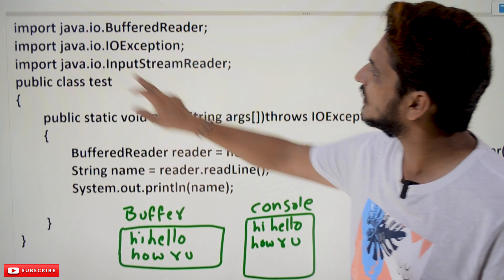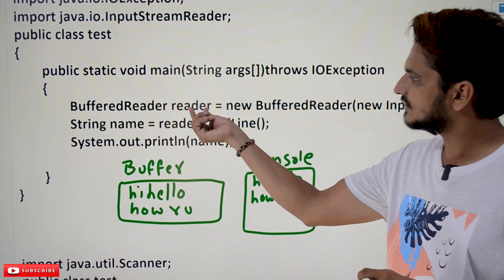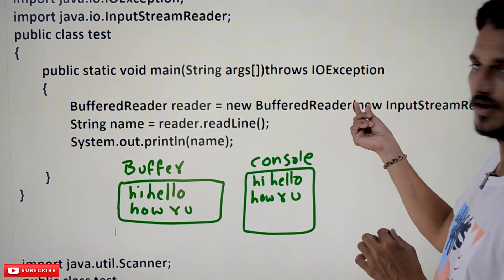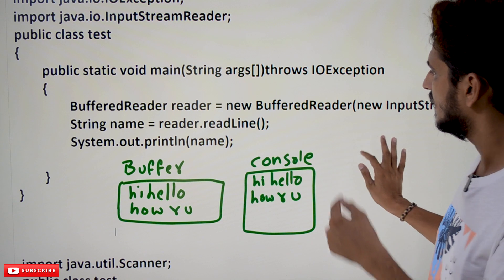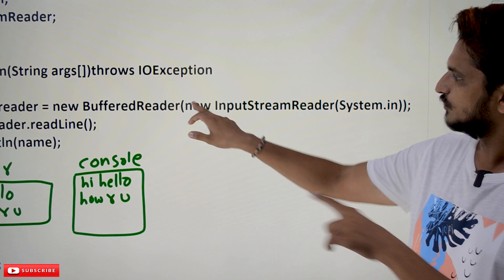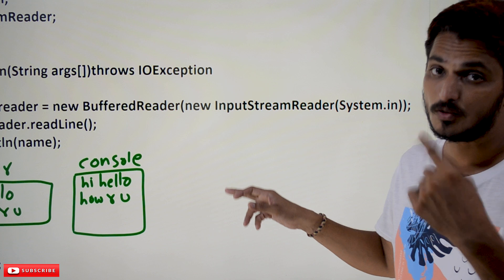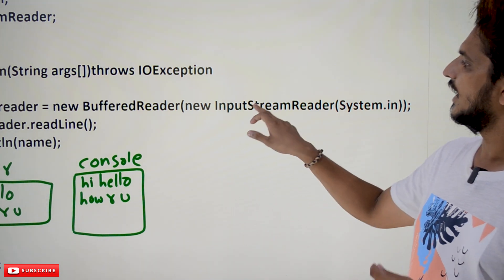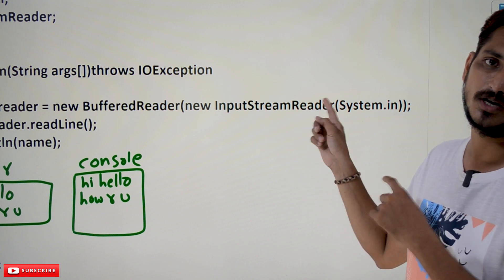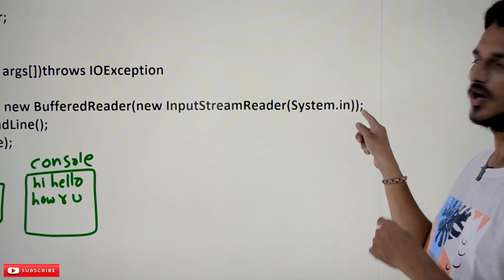In java.io we have a BufferedReader class. The object name is 'reader', equal to new BufferedReader — meaning we are creating an object for the BufferedReader class. For that object's constructor, we are sending an object of new InputStreamReader — meaning we are creating an object for the InputStreamReader class. For the InputStreamReader constructor, we are sending System.in.